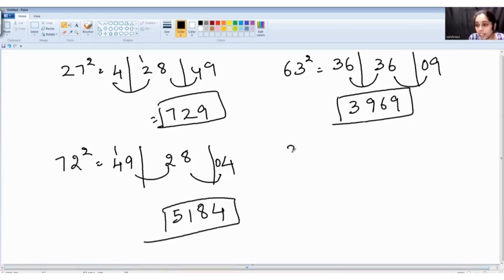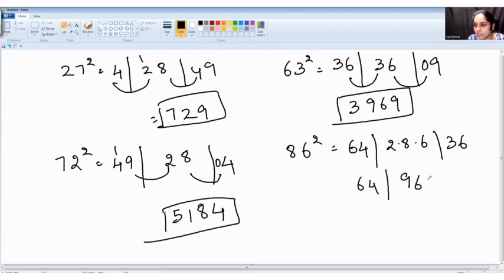One more problem. 86 square. 8 square is 64, 6 square is 36, 2 into 8 into 6. So 2 into 8, 2 eights is 16, 16 sixes is 96. Or 2, 6, 12, 12 eights is 96. Both are same. 36. So need to add these digits. 6, 9, 3, 1 carry, 7, 3, 9, 6 is your answer.